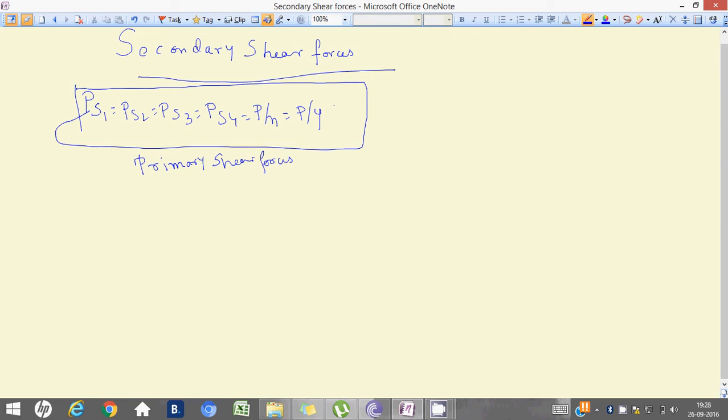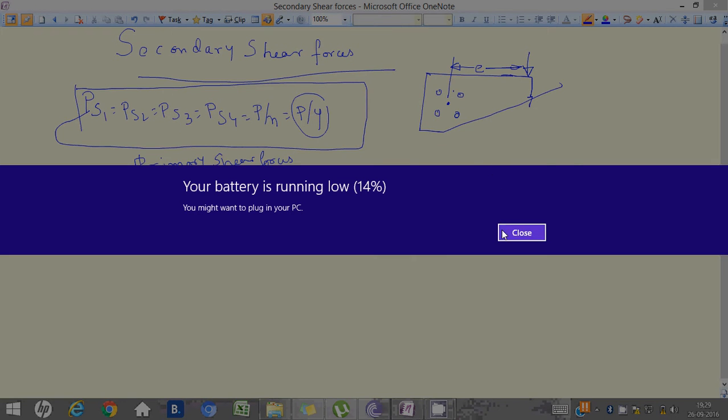Now, as we have known one thing that by superimposition of forces, it has been shared by all the rivets as p by 4. There is another thing, you just shift in the superimposition because it was something like that, right? Let me draw. Something like that, right? The CG is this way, it is at the eccentricity e, isn't it?